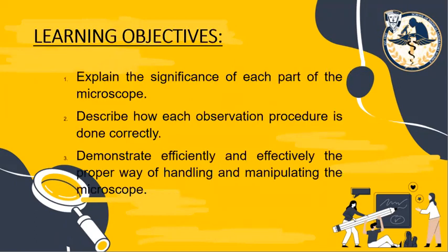The objectives of this activity are the following: explain the significance of each part of the microscope; describe how each observation procedure is done correctly; and demonstrate efficiently and effectively the proper way of handling and manipulating the microscope.